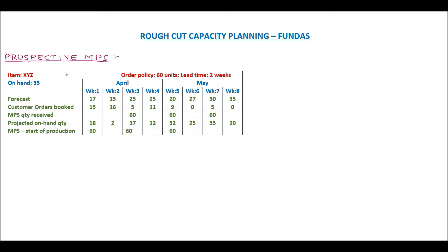Let's consider this prospective MPS — that is, master production schedule. As per the information given to us: a starting on-hand of 35, an order policy of ordering or manufacturing 60 units, and a lead time of 2 weeks for manufacturing. We have put together this MPS plan where 60 units need to be received in week 3, 60 units in week 5, and 60 units in week 7, calculated based on forecast, customer orders, and inventory on hand.